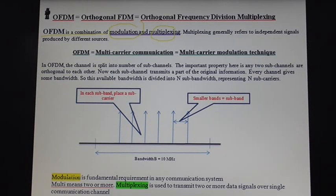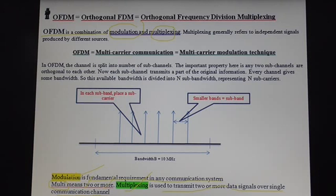Modulation is the fundamental requirement of any communication system, whether the system is AM, FM, Wi-Fi, WiMAX, or whatever it may be. Multiplexing is used to transmit two or more data signals over a single communication channel. Note that the term 'multi' refers to more than one, or two or more. So OFDM is a multi-carrier communication system, referring to multi-carrier modulation technique.